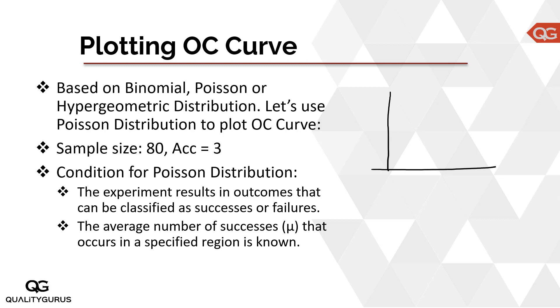Based on that, we plotted an OC curve. In the OC curve, the x-axis is the percent defectives in the lot and the y-axis is the probability of accepting the lot. The OC curve looks like this — the black line represents the real-world curve — and we place alpha here on the curve along with the AQL.